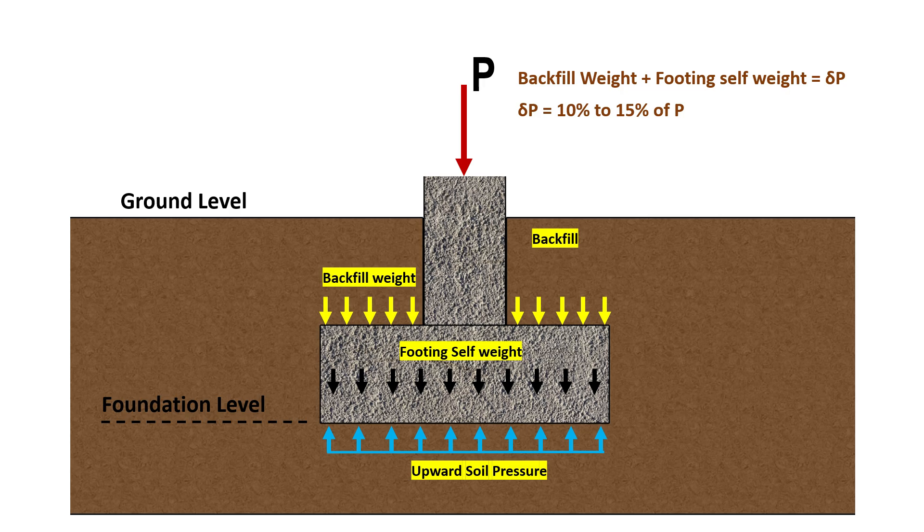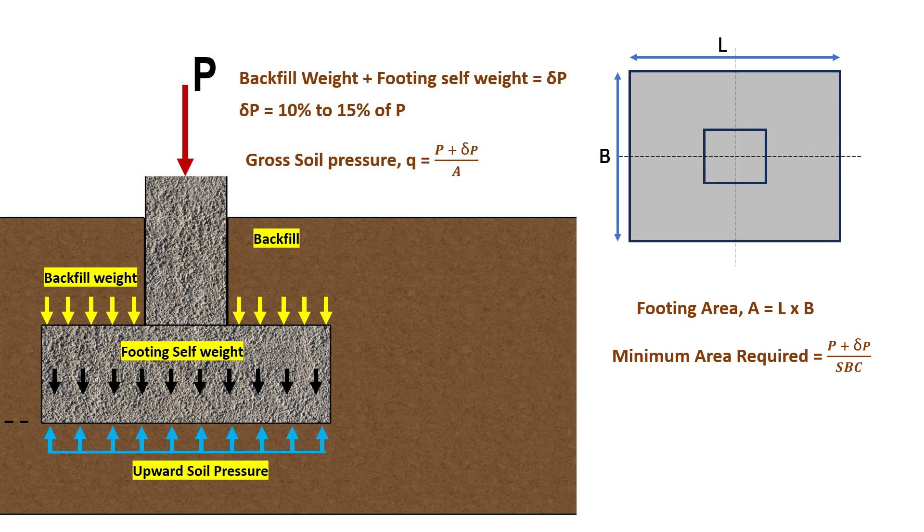In a symmetrically loaded footing, the gross soil pressure is equal to the column load plus the combined weight of footing and backfill upon the area of footing. The minimum area required for the footing can be calculated as column load plus the combined weight of footing and backfill divided by the allowable soil bearing capacity.